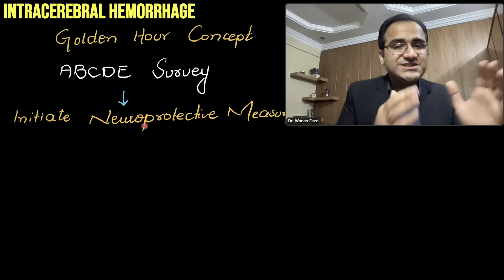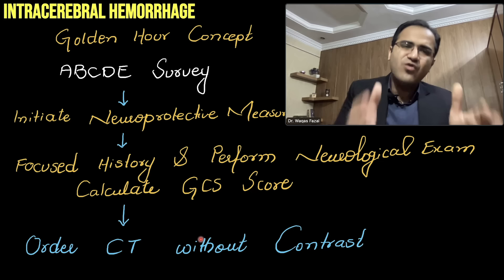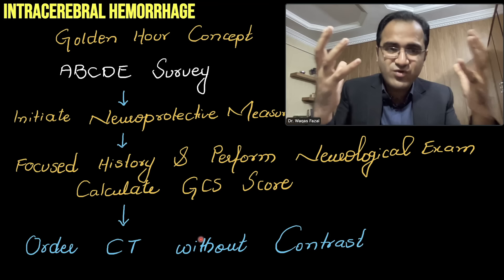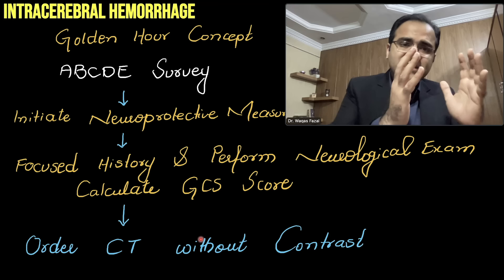Take a focused history, perform a neurological exam, and calculate the GCS score. After initiating neuroprotective measures, order a CT scan without contrast. You need to determine whether this is an ischemic stroke or a hemorrhagic stroke. If there is blood on the CT scan, it is a hemorrhagic stroke; if there is no blood, it is an ischemic stroke.